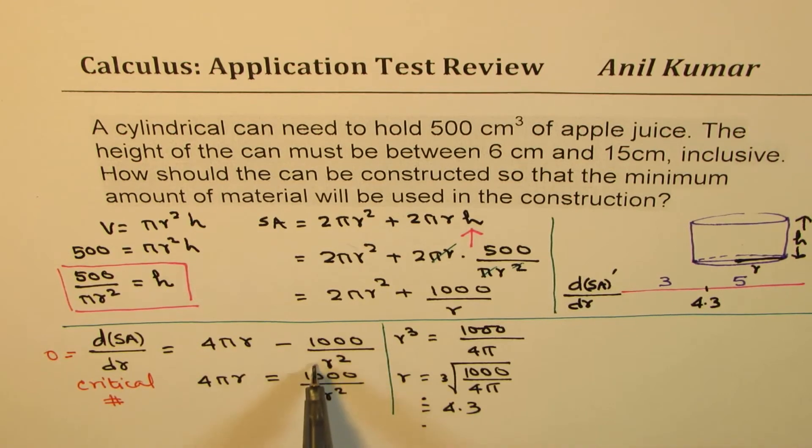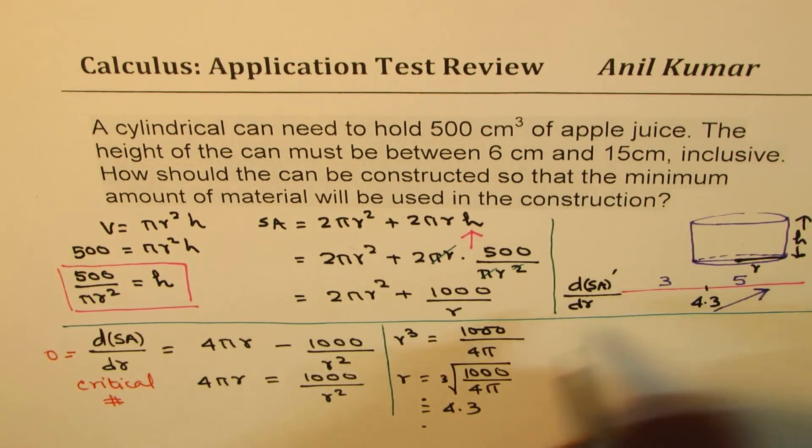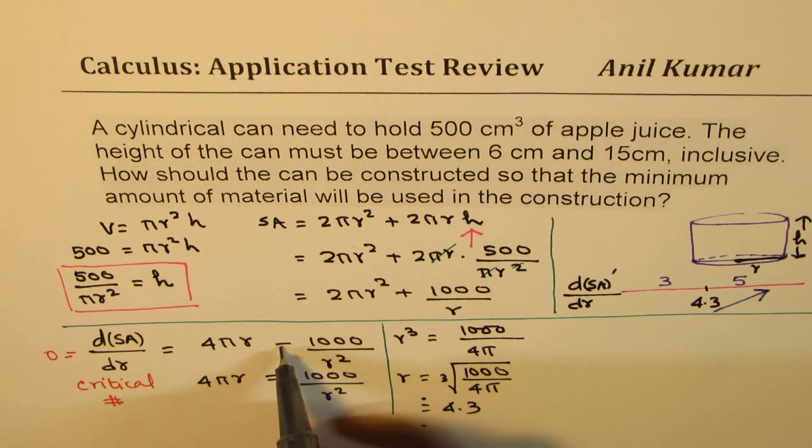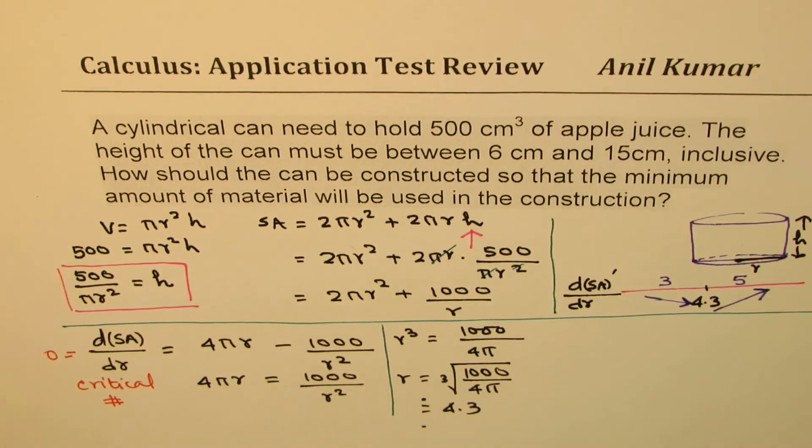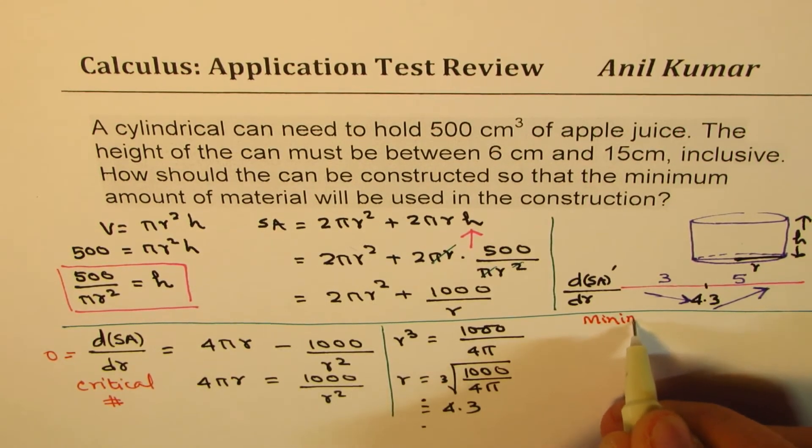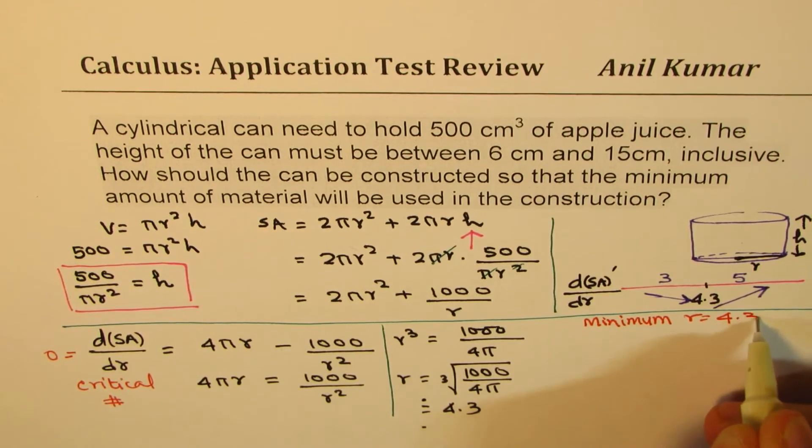But if I have a bigger value here, let's say 5, then this number will be smaller. So we get a positive answer. So in this side, it is positive. And if I substitute smaller value, then this will be bigger. And so we get a negative answer. So that ensures that we do have minimum for r equals to 4.3.